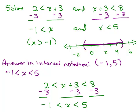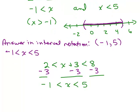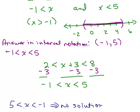Are there numbers between negative 1 and 5? Yes. If it were the other way around — with 5 on the left — there would be no solution, because you can't have a number that's bigger than 5 and at the same time less than negative 1. But there are numbers bigger than negative 1 and less than 5 — for instance, 0, 4, et cetera, everything shown on this graph.